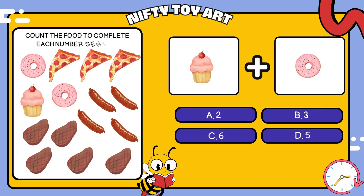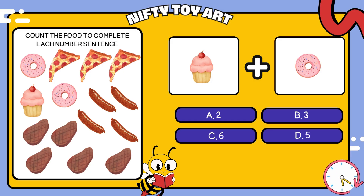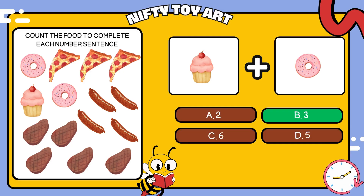We have cupcakes and donuts. How many foods is that in total? That's right, three.